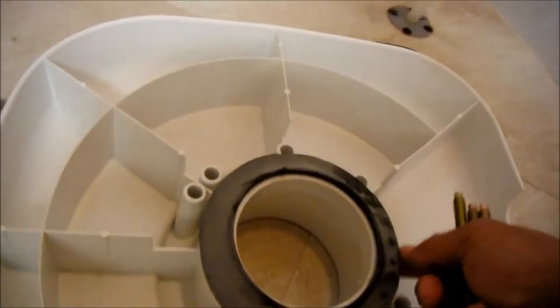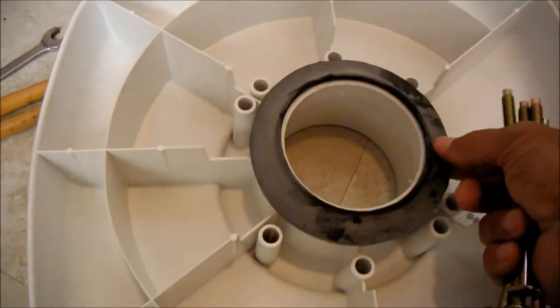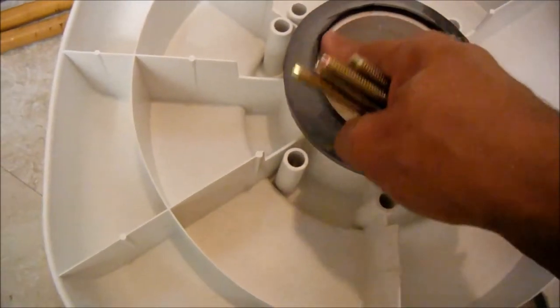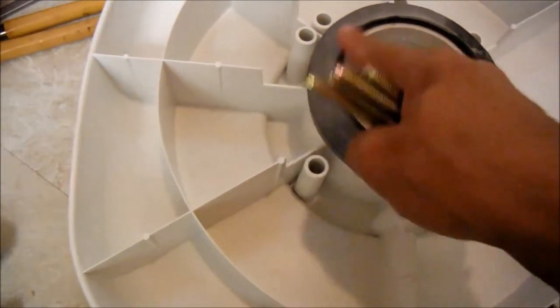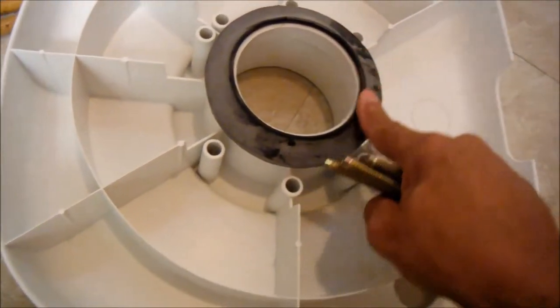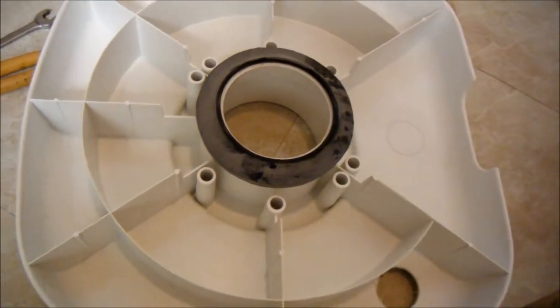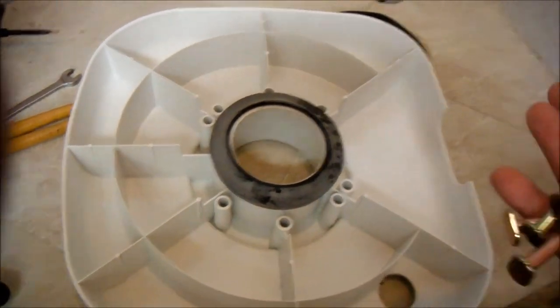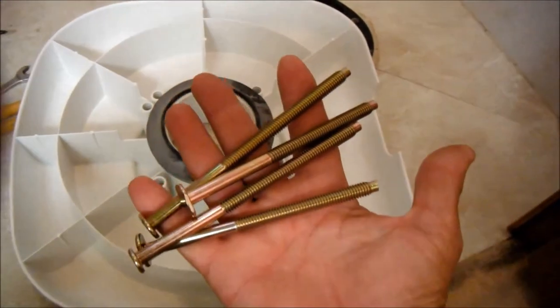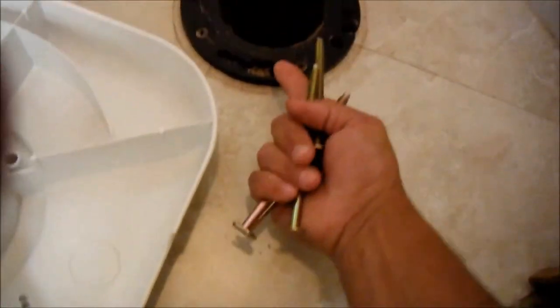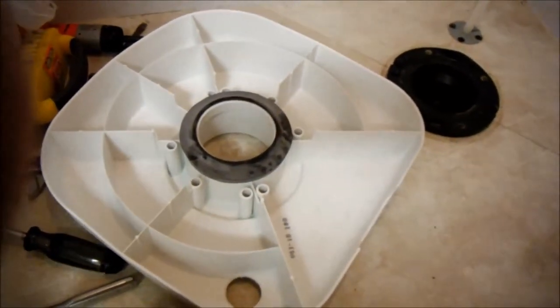Step one. This seal needs to be put on. We put a little bit of detergent around the inside edge just to help it slide on. Make sure that the sharp edge of this seal is facing away from the riser. Next step will be to put these four extra-long bolts in the flange and then mount the riser on top of that.